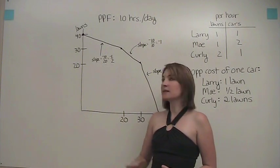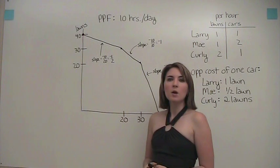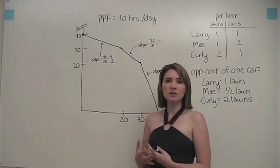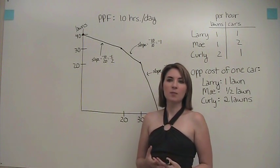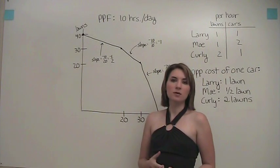Again, in general, we see this sort of shape for our production possibilities frontier, because if we're thinking about how to get the most out of our resources, we want to switch over the resources with the least opportunity cost first, then the next least cost, and so on and so forth. We'll see you next time.